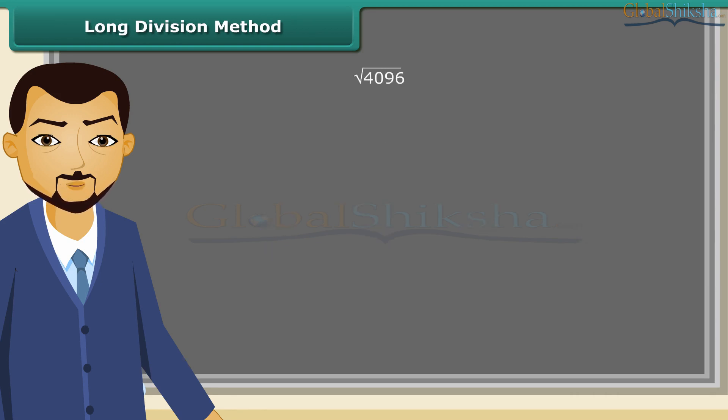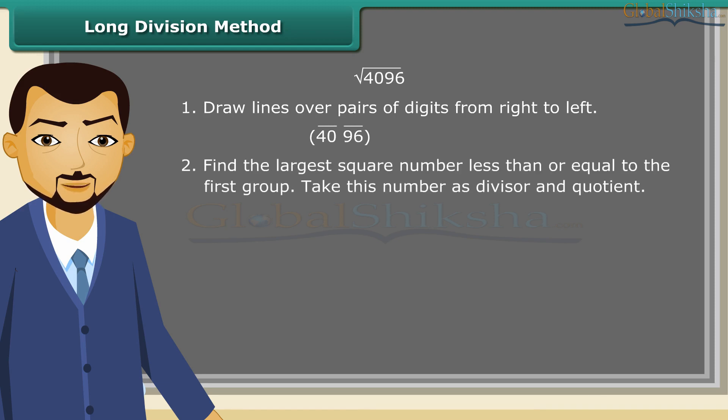For large numbers, the prime factorization method of finding square root becomes difficult. So, we use long division method. Let us look at the steps. First of all, draw lines over pairs of digits from right to left. Next, find the largest square number less than or equal to the first group. Since 36 is less than 40, so we take 6 as the divisor and 6 as the quotient. Now, subtract 36 from 39.